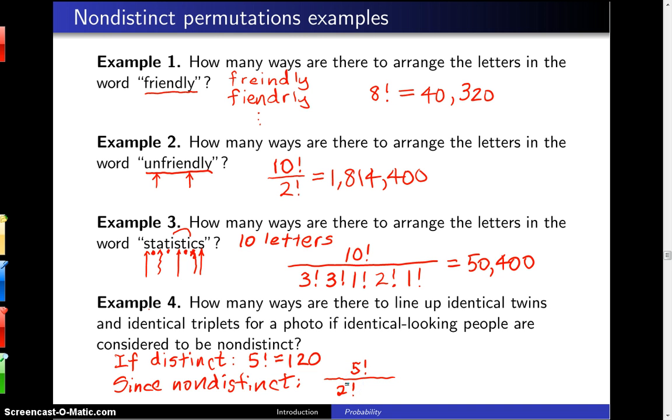And then divide by 3 factorial because you cannot tell the triplets apart. When you work this out this is 120 divided by 12 which means there's 10 different ways of lining up people in that fashion.